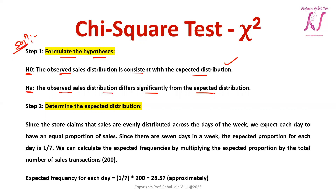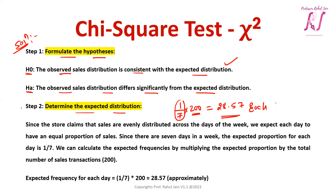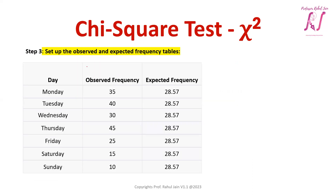Step 2 is to determine the expected distribution. We have seven days — Monday to Sunday — so total days are seven, and total sales transactions are 200. Therefore, the expected frequency for each day is 200 divided by 7, which is approximately 28.57.